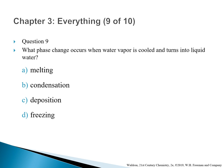Question 9: What phase change occurs when water vapor is cooled and turns into liquid water? A. Melting. B. Condensation. C. Deposition. D. Freezing. The correct answer is B — condensation. We often say water vapor condenses into liquid, so the transformation is condensation.